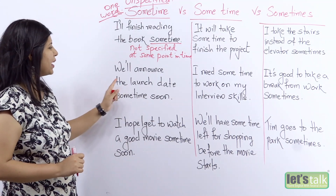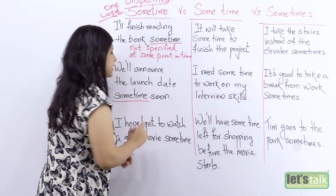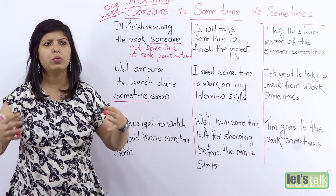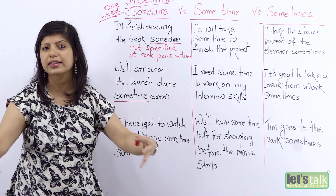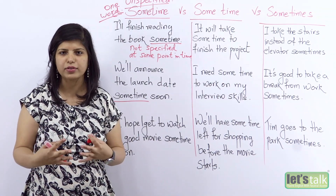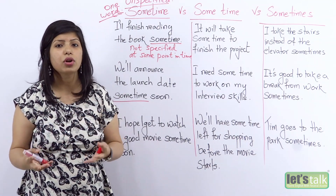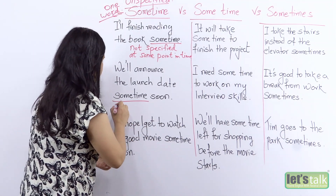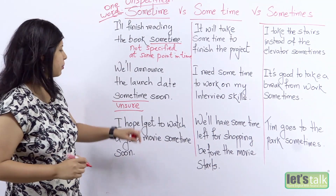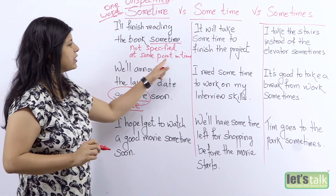The next example: 'We'll announce the launch date sometime soon.' This is a sentence that could be used by someone who runs a business, maybe someone who works with products and has to launch products in the market. When you speak to the press or sponsors, you would say 'we'll announce the launch date sometime soon.' We're not sure, we're still working on it — we know we have to launch the product but we don't know when. Hence, we are using the word sometime — at some point in time.